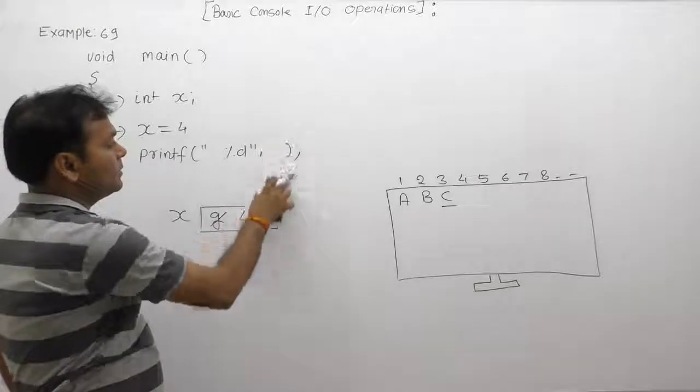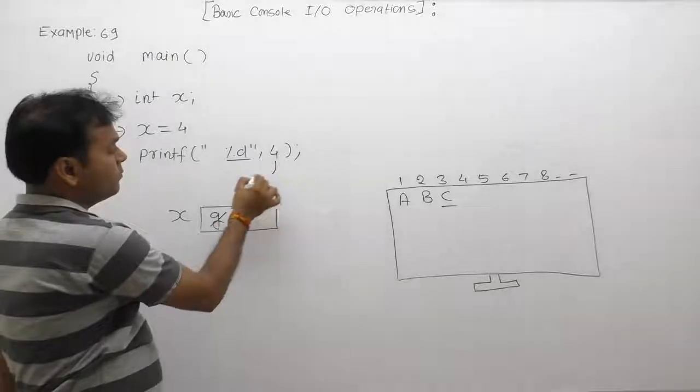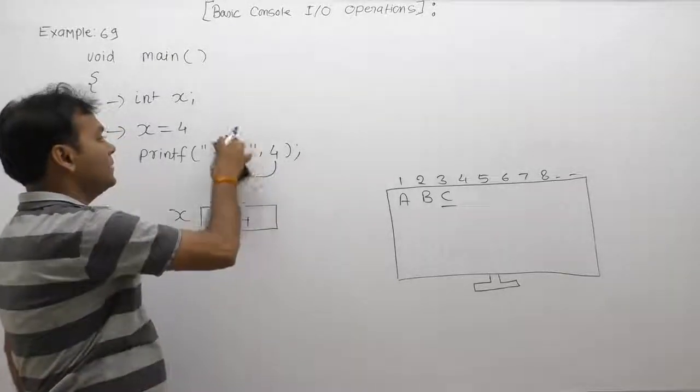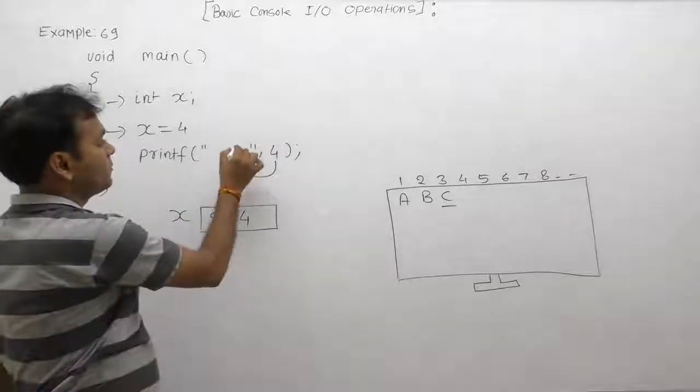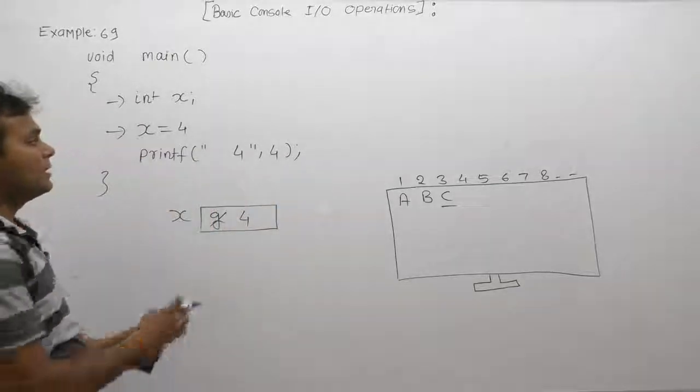Then in place of percent d, the value as four is supplied. Now percent d is replaced by four, means space four. Then the final string to display the message...